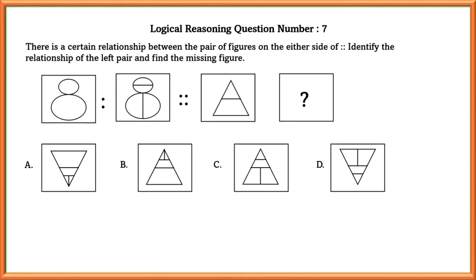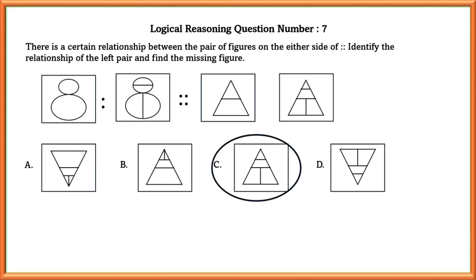Logical reasoning question number seven: there is a certain relationship between the pair of figures on either side of the colon. Identify the relationship of the left pair and find the missing figure. In the first figure they have drawn one vertical line and one horizontal line. Similarly, in the second figure we draw a vertical line and a horizontal line, and the image matching is option C.